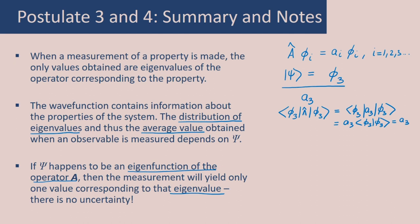Interestingly, this average value that we have been talking about is sometimes referred to as expectation value. These are just synonyms, and average value is the more accurate term, because when you make a measurement you expect to get a distribution of values, not this average value. But by convention, the average value is also referred to as expectation value, and it is commonly accepted terminology.